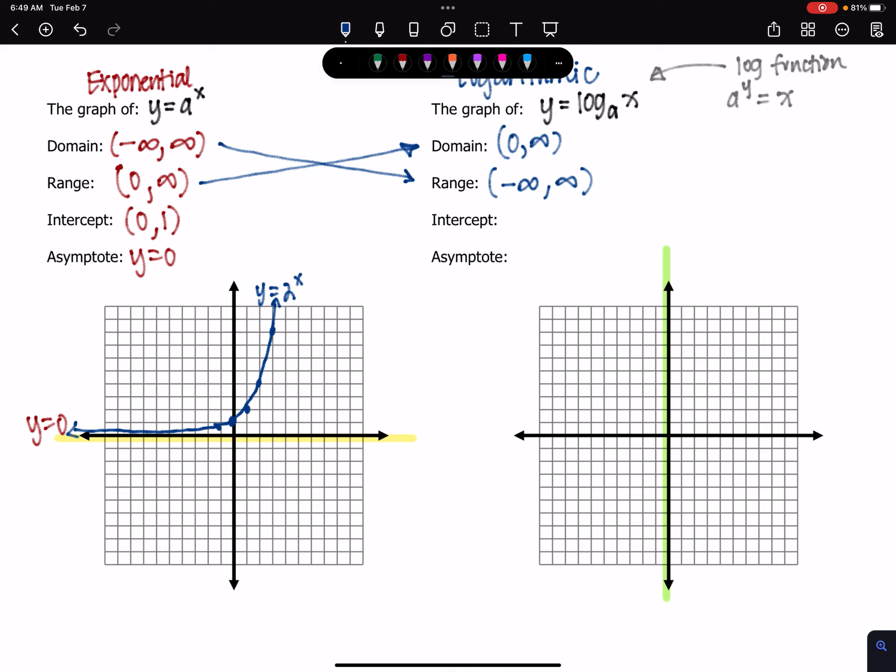That right there is what defines the fact that these two functions are inverses of one another. So with that in mind, our intercept of 0, 1 is going to become an intercept of 1, 0. And then our asymptote, instead of being a horizontal asymptote at y equals 0, it's going to be a vertical asymptote at x equals 0.